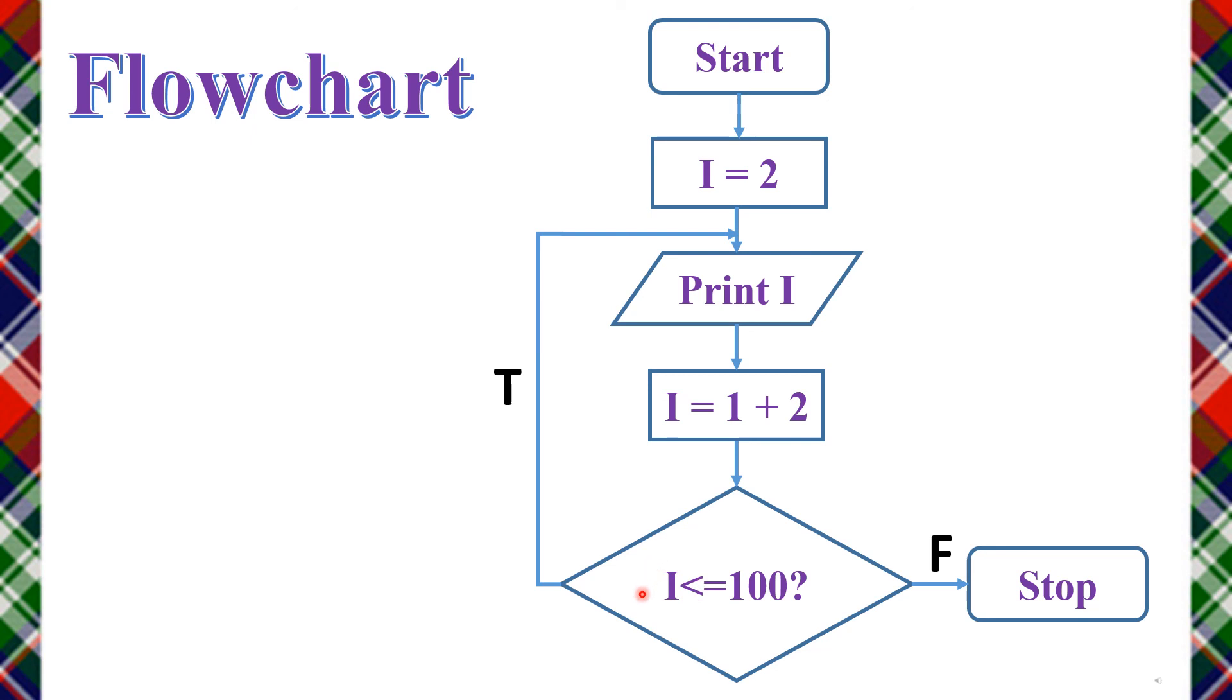And next, we check the condition. If the condition is true, we repeat. If the condition we gave becomes false, the program stops. That is, when I reaches 102, the condition is false, so finally the program stops.